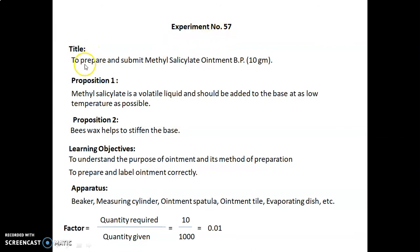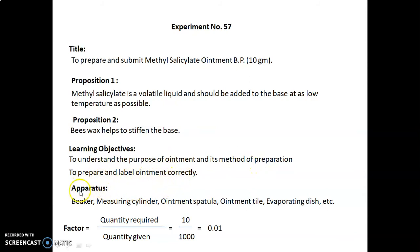In the next session, we will see Experiment Number 57 in detail. The title is: to prepare and submit methyl salicylate ointment BP (British Pharmacopoeia), 10 grams. Proposition 1: methyl salicylate is a volatile liquid and should be added to the base at as low a temperature as possible. Proposition 2: beeswax helps to stiffen the base. Learning objectives are to understand the purpose of ointment and its method of preparation, and to prepare and label the ointment correctly. Apparatus required includes beaker, measuring cylinder, ointment spatula, ointment tile, and evaporating dish.